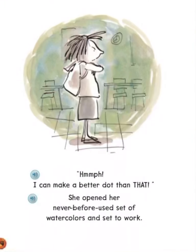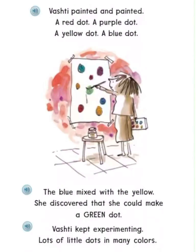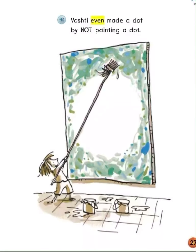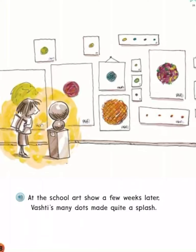Hmm. I can make a better dot than that. She opened her never-before-used set of watercolors and set to work. Vashet painted and painted — a red dot, a purple dot, a yellow dot, a blue dot. The blue mixed with the yellow; she discovered she could make a green dot. Vashet kept experimenting with lots of little dots and many colors. If I can make little dots, I can make big dots too. Vashet splashed her colors with a bigger brush on bigger paper to make bigger dots. Vashet even made a dot by not painting a dot. At the school art show a few weeks later, Vashet's many dots made quite a splash.